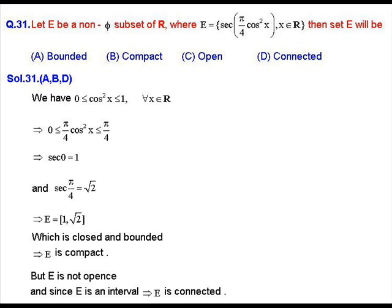The secant function is increasing on [0, π/4]. So the minimum value of sec is at θ = 0, giving sec(0) = 1, and the maximum value is at θ = π/4, giving sec(π/4) = √2. Therefore, the range of f, which is set E, equals the closed interval [1, √2]. Since it is a closed and bounded interval, it is compact.